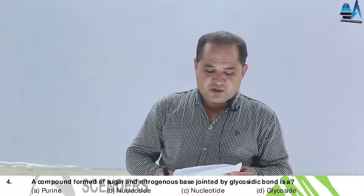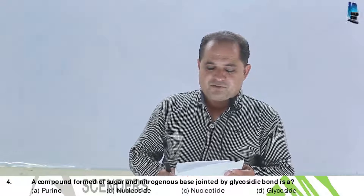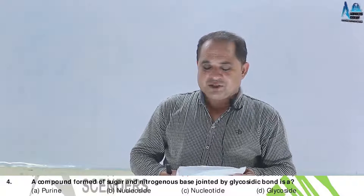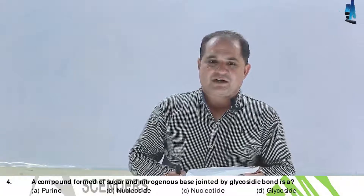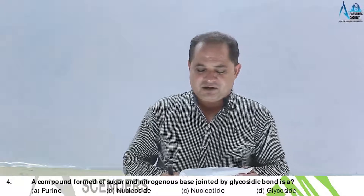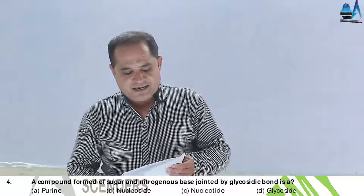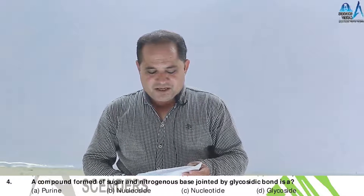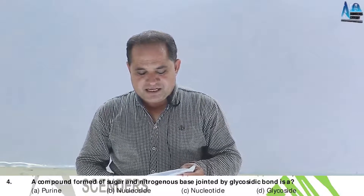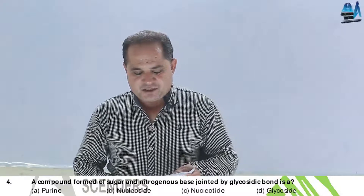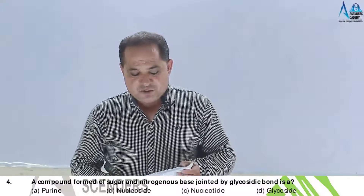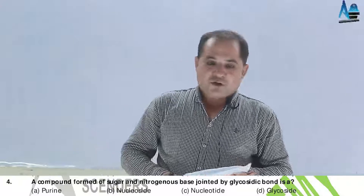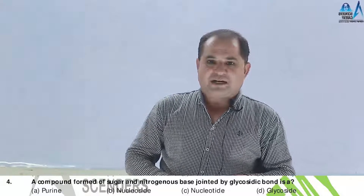Question number 4. A compound formed from a sugar and a nitrogenous base joined by a glycosidic bond is: A, purine; B, nucleoside; C, nucleotide; D, glycoside. The answer is nucleoside.